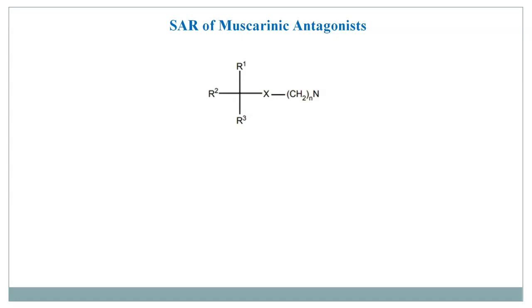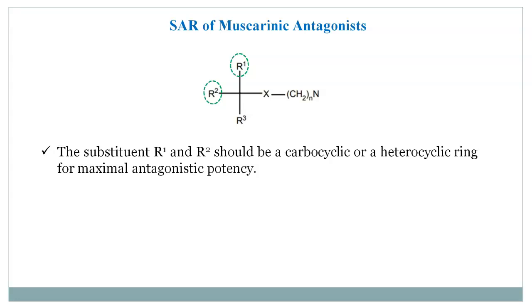In the general structure, there are different substituents: R1, R2, R3, then X, then a CH2 chain length, and a nitrogen. The R1 and R2 substituents should be carbocyclic or heterocyclic rings for maximum antagonistic potency, as these molecular groups are responsible for producing van der Waals forces of attraction with the receptor, forming a complex with it.